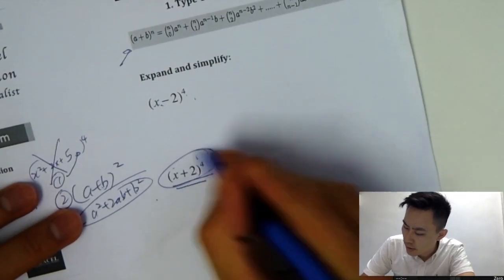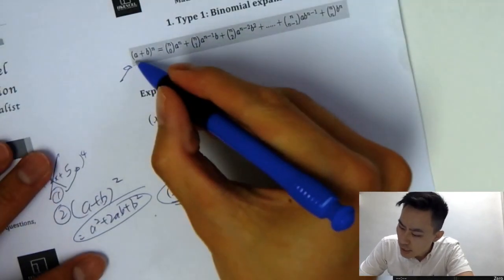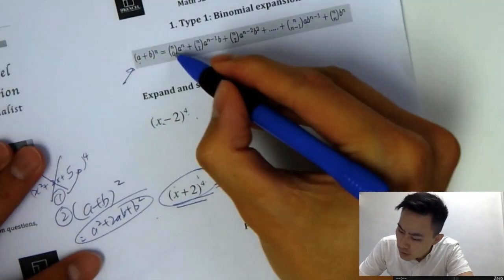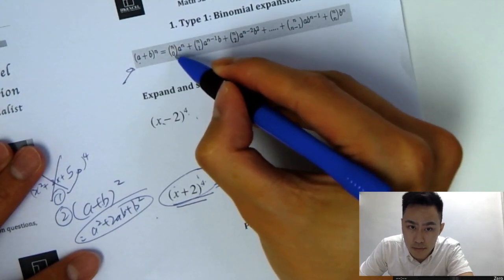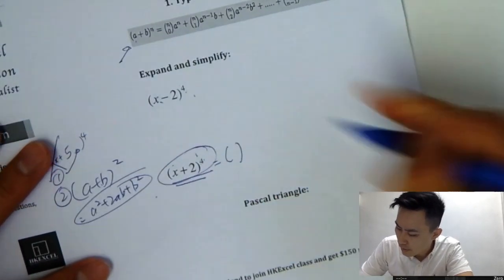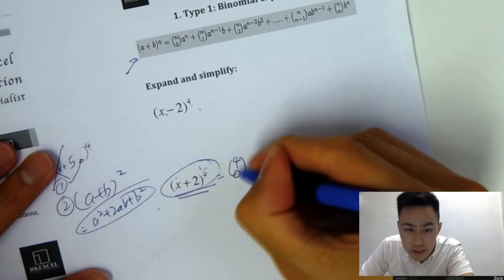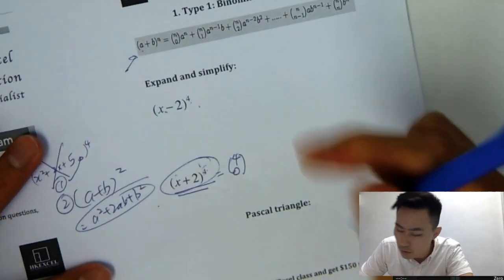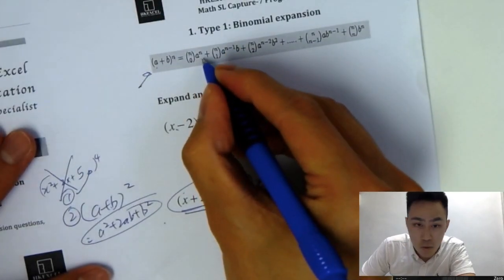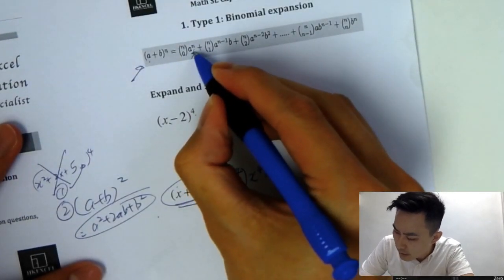First, let's look at (x + 2) to the power 4 and apply the technique. So A plus B — A is the first term, which is x, and B is the second term, which is 2, and N is just 4. You can see the bracket notation here: it starts with N choose 0, then A to the power N. You just copy the whole structure — this is power 4, and we start with 0. For A you copy x to the power 4. I'll also write the B term: 2 to the power 0.